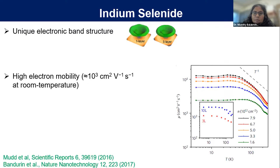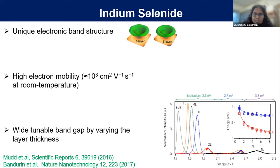This material has a high electron mobility, as we studied from Hall effect measurements including quantum Hall effect. It is the first material in the 2D semiconductor group to show such high electron mobility — graphene is a semi-metal with the highest electron mobility, but in the semiconductor group, indium selenide has the higher electron mobility. It also has a wide, tunable band gap that varies with thickness, ranging from around 1.25 eV in the bulk to 2 eV in the monolayer, giving very large tunability.